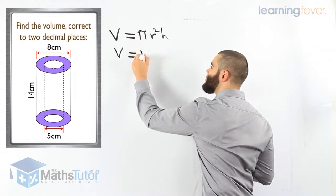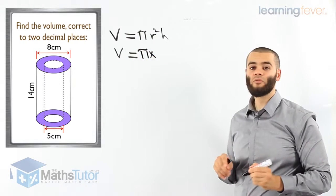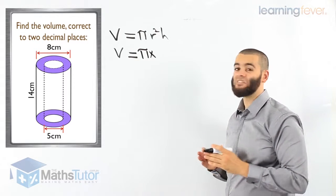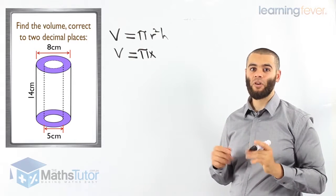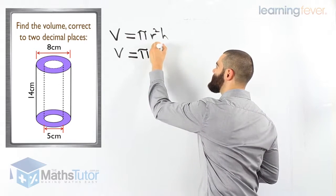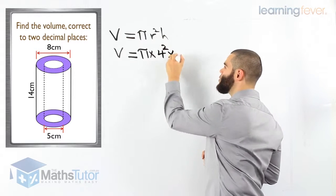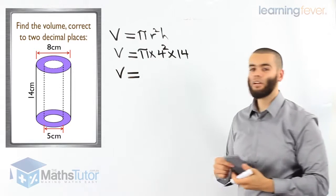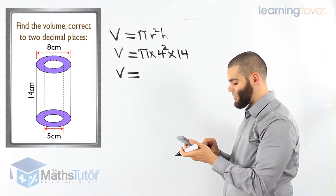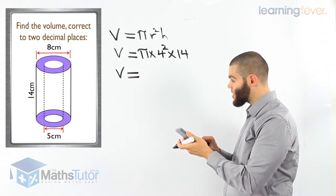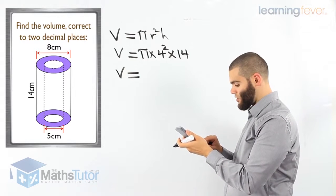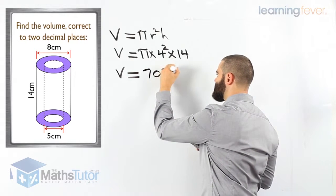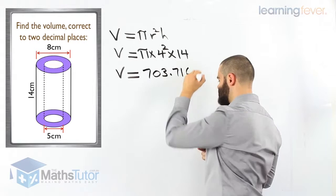Pi times the radius of the large cylinder, which is 4. We know the diameter is 8 centimetres, and half the diameter is the radius, so the radius is 4. That gives us pi times 4 squared times the total height of 14. Let's work out the volume of the large cylinder: pi times 4 squared times 14 equals 703.716, and the answer continues.